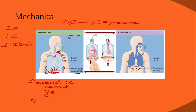The diaphragm and intercostal muscle changes increase the volume inside the chest. When the volume opens up, it creates a negative pressure inside the chest compared to the outside. This is negative pressure ventilation.